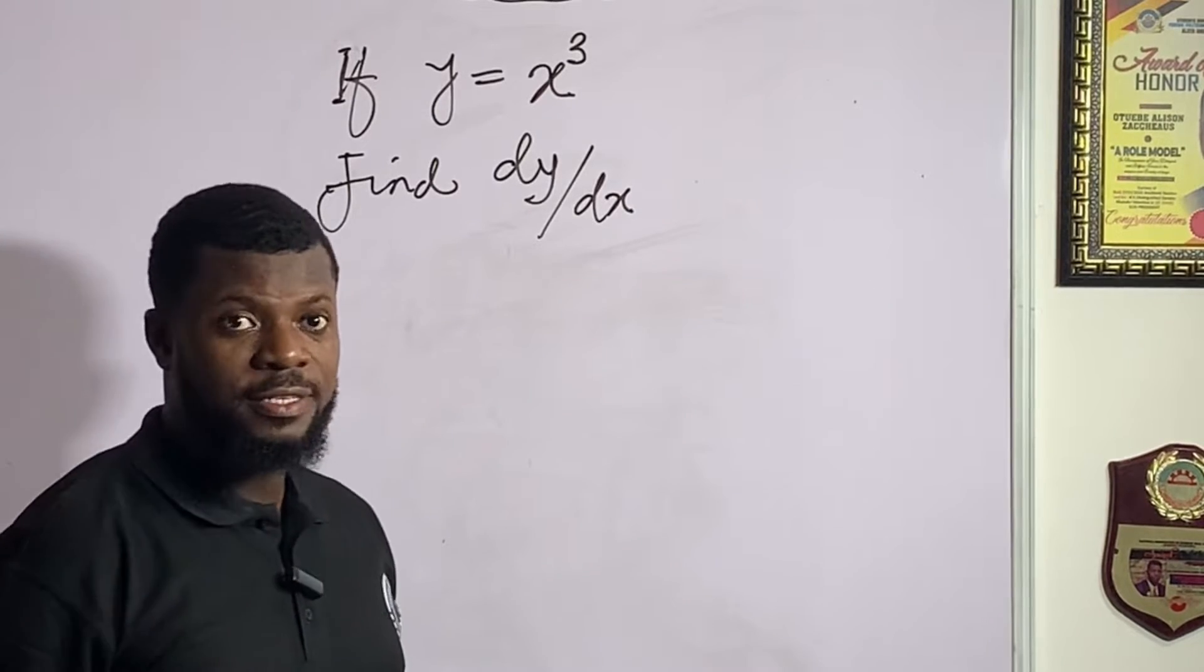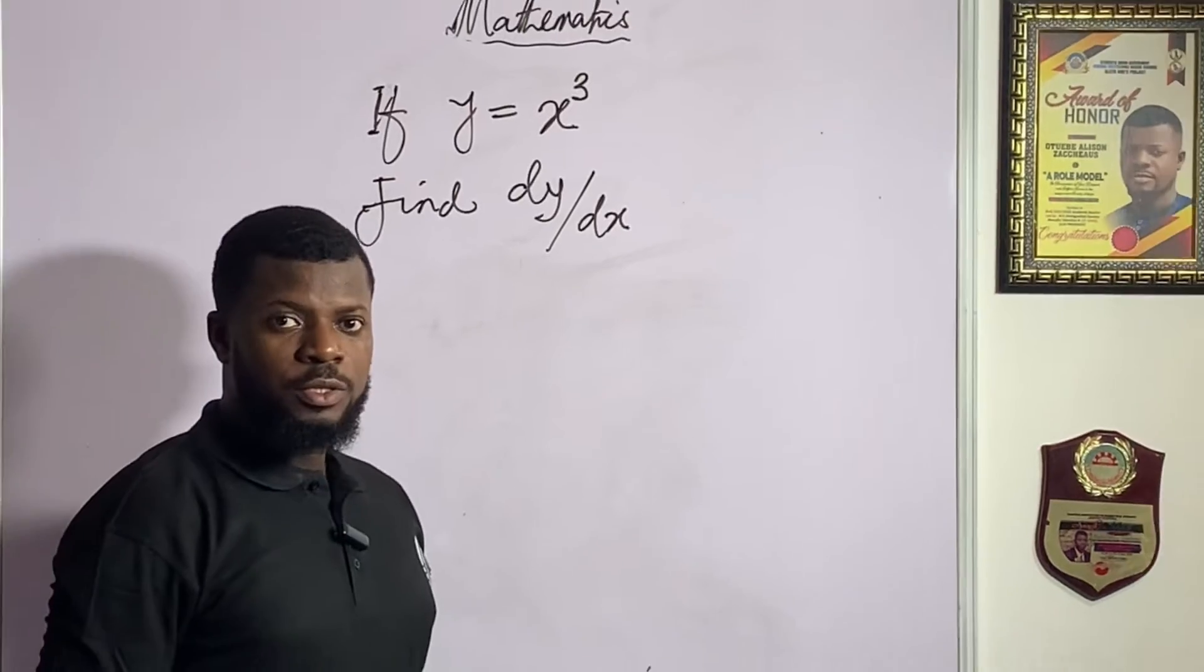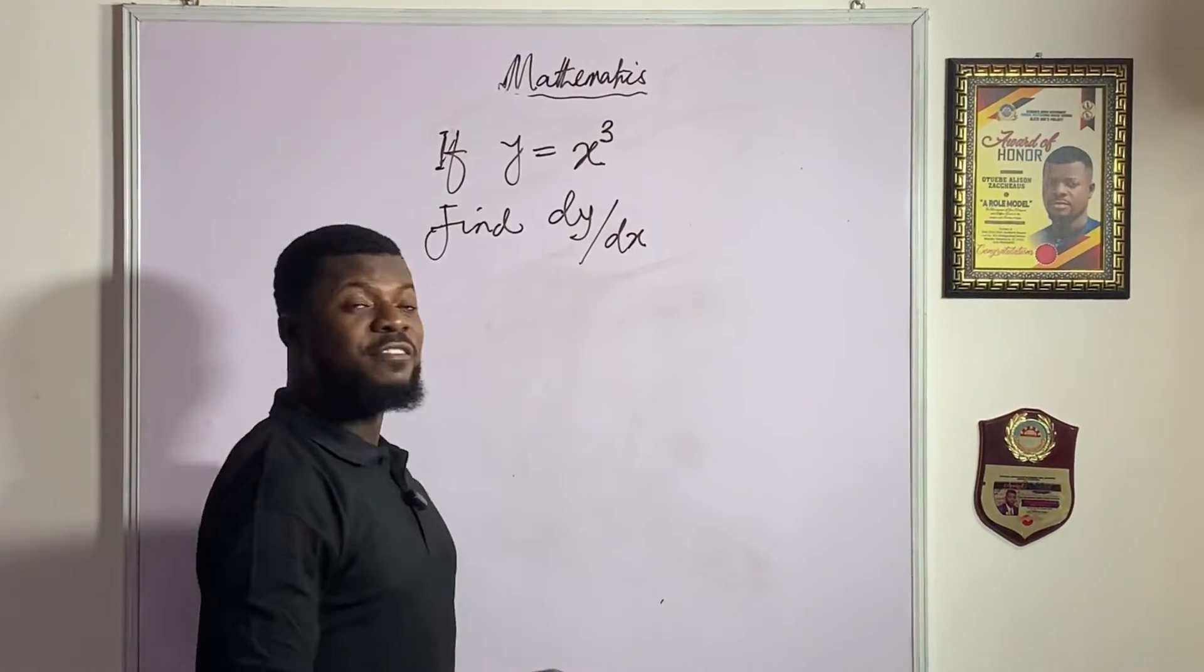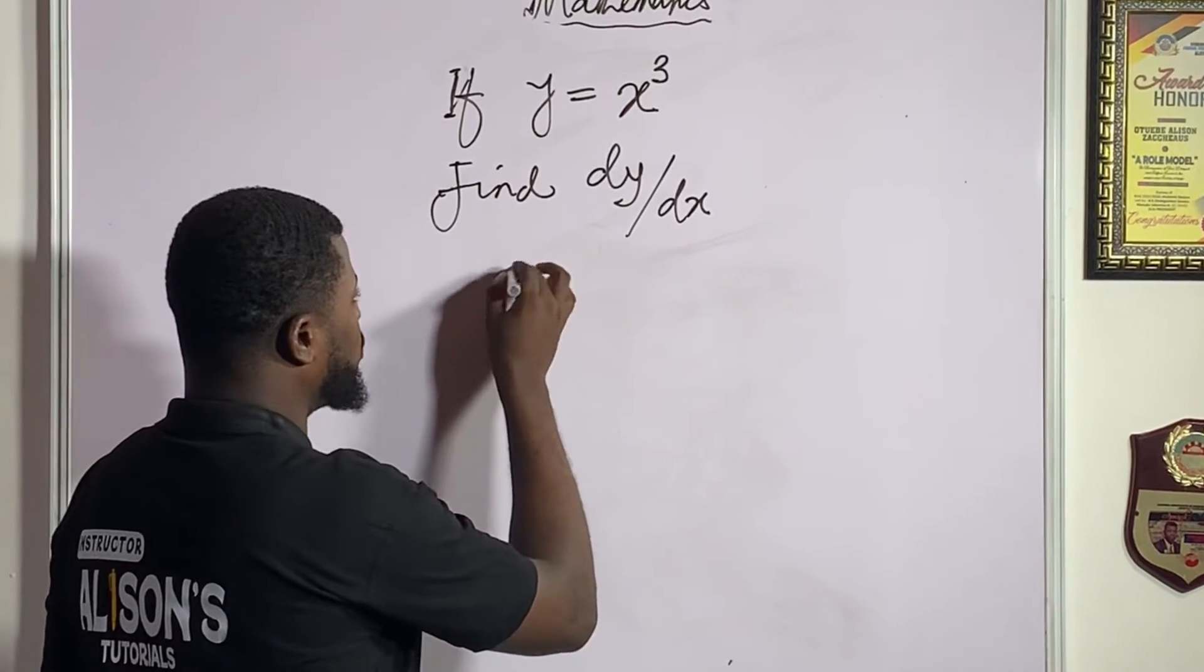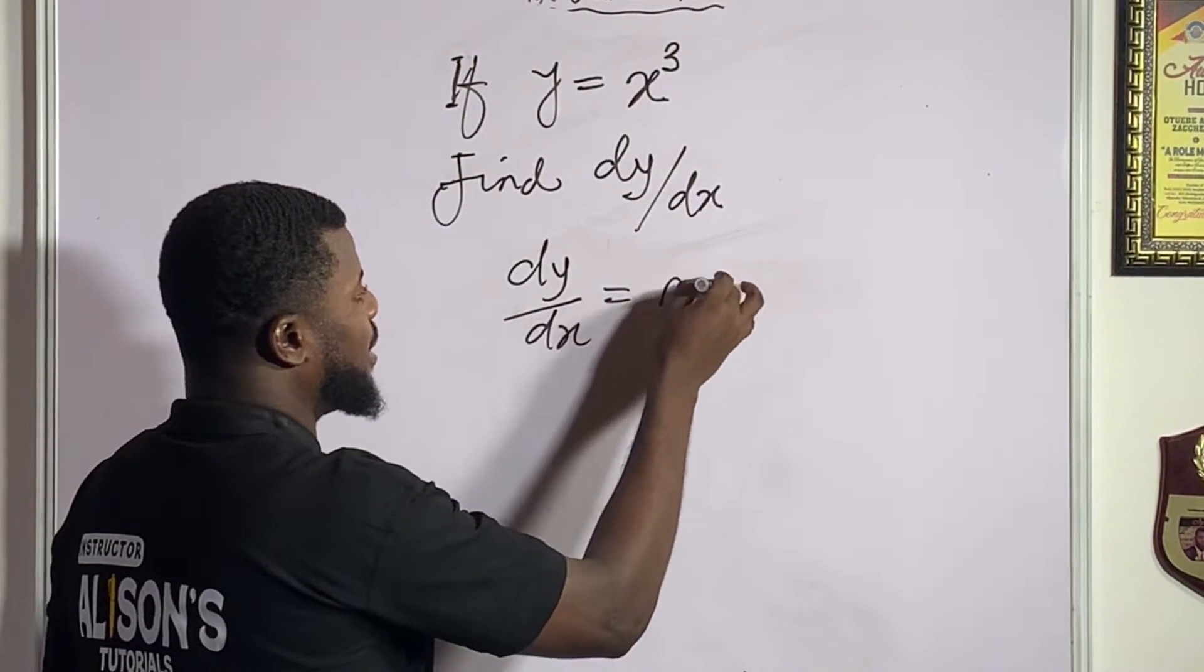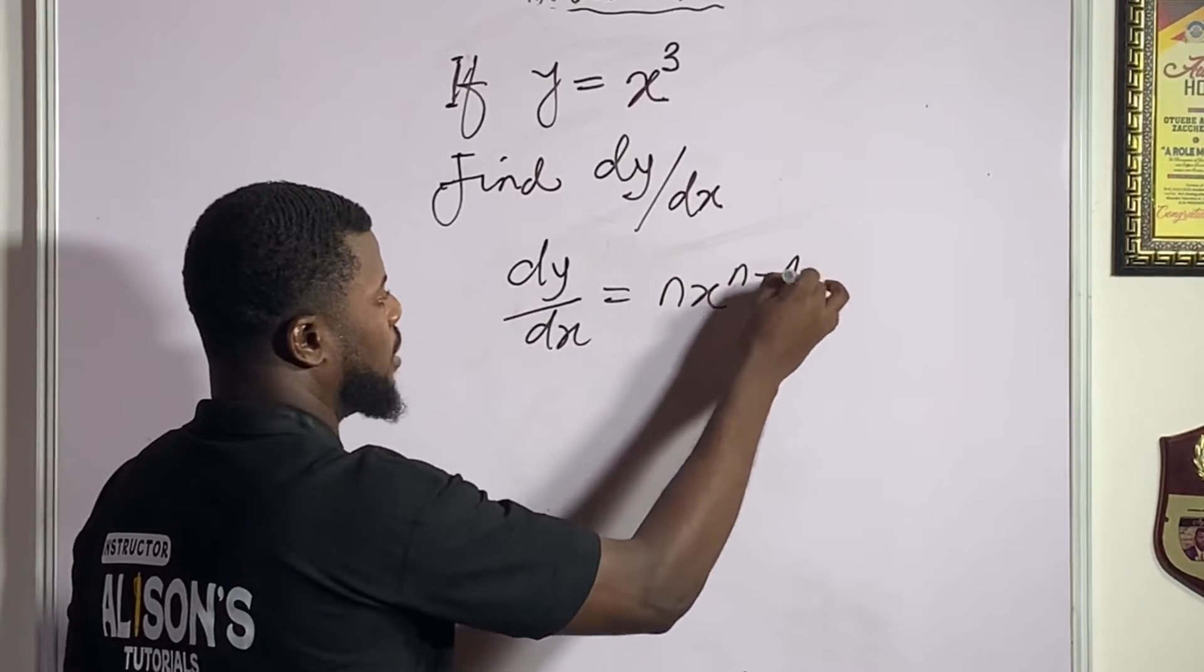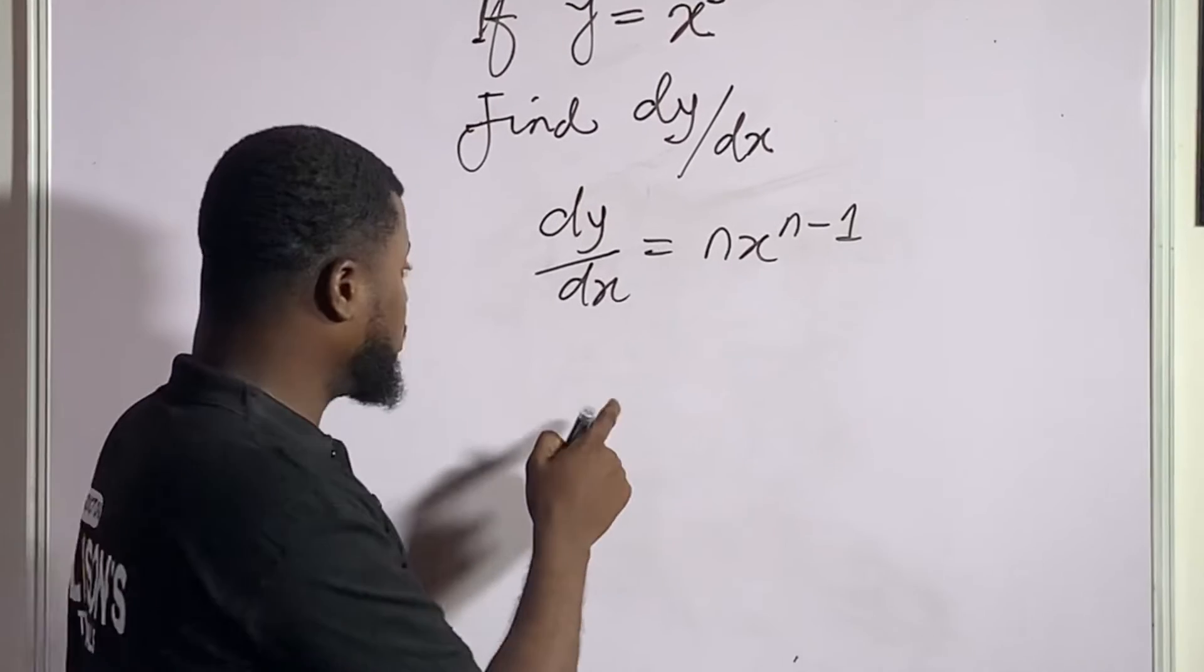How are we supposed to fix this? We have a general formula for differentiation and the general formula for differentiation is dy over dx equals nx to the power of n minus one. This is one of the formula. It is also the same thing with dy over dx equal to anx to the power of n minus one.